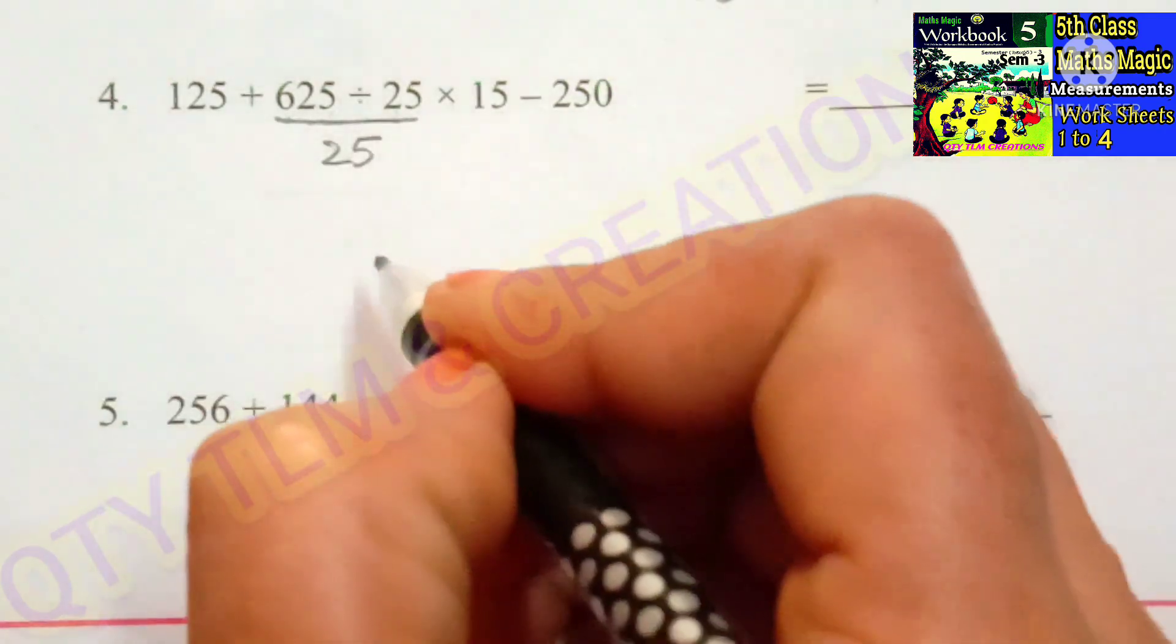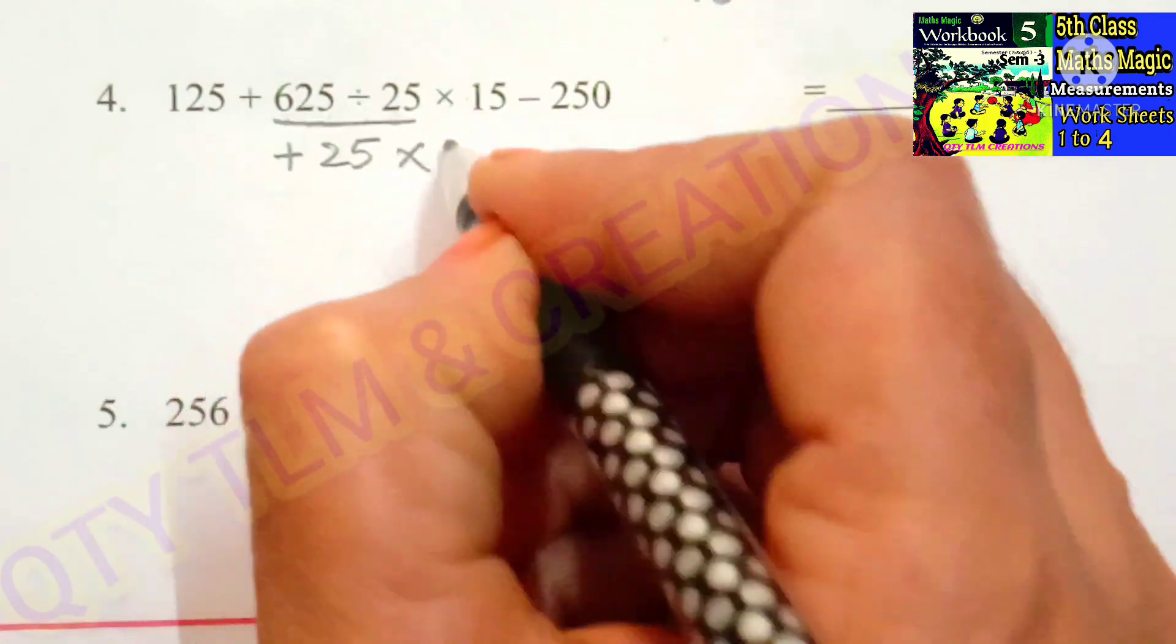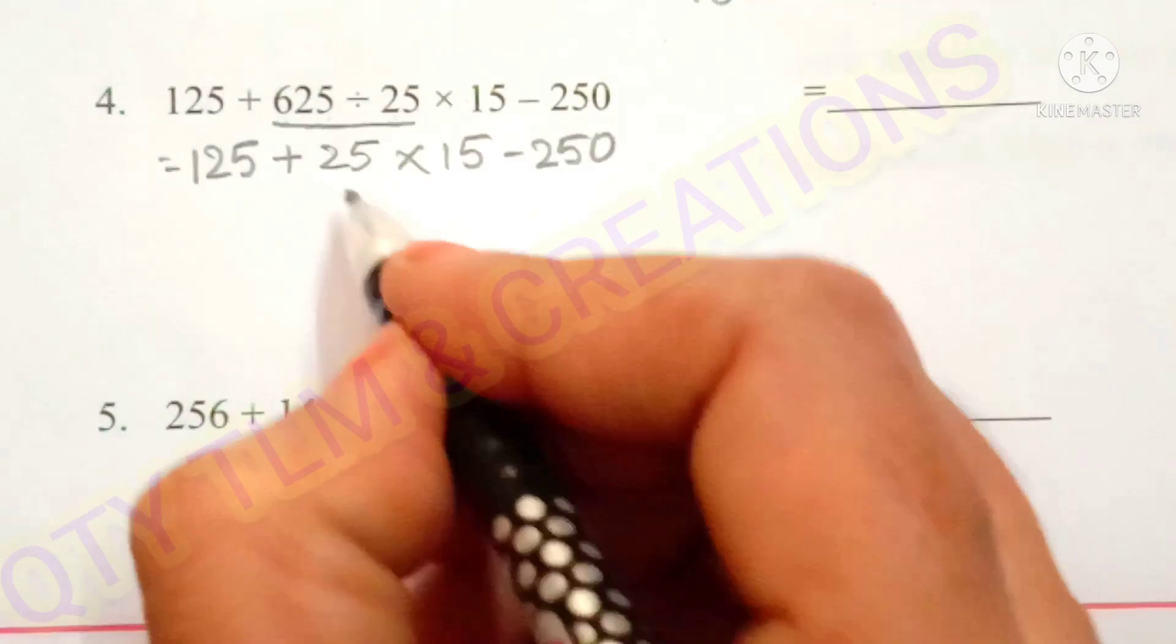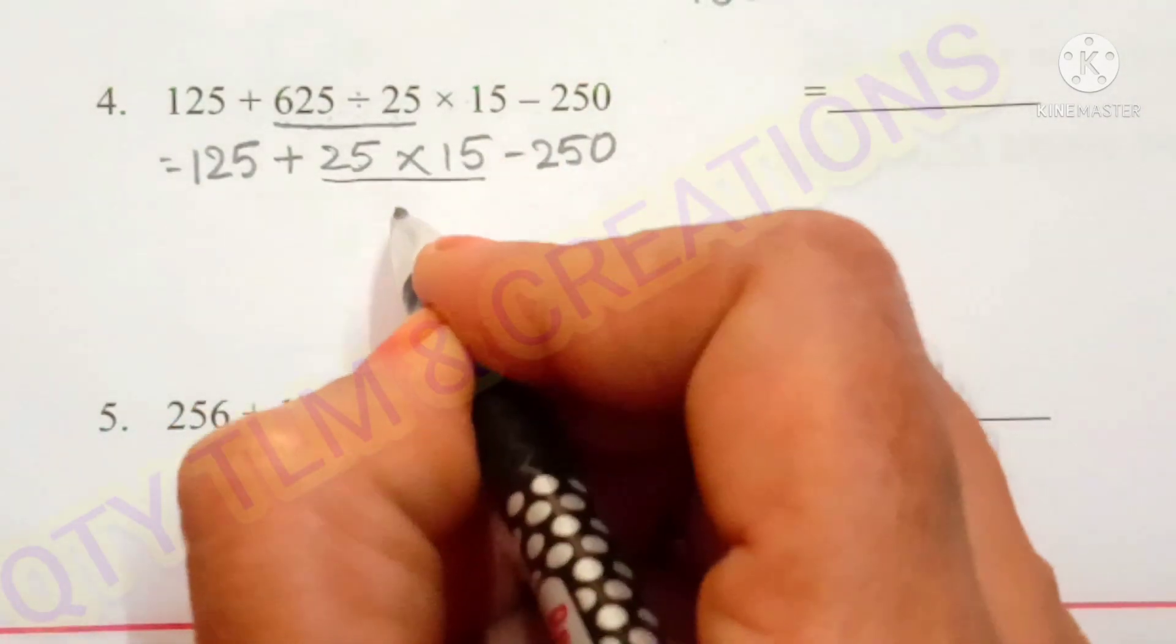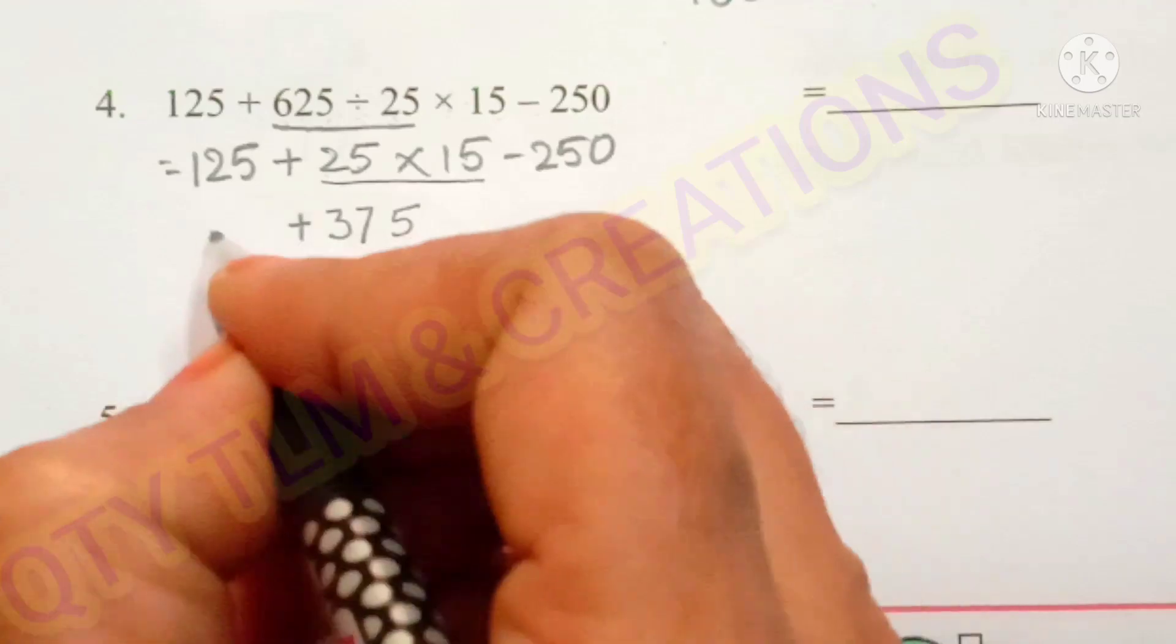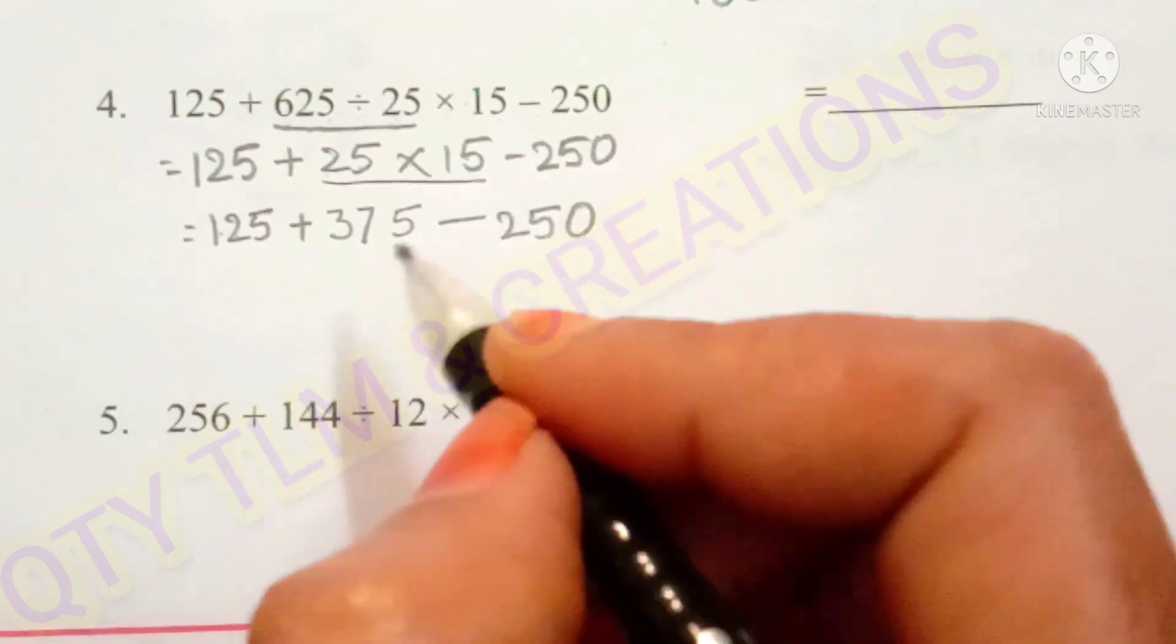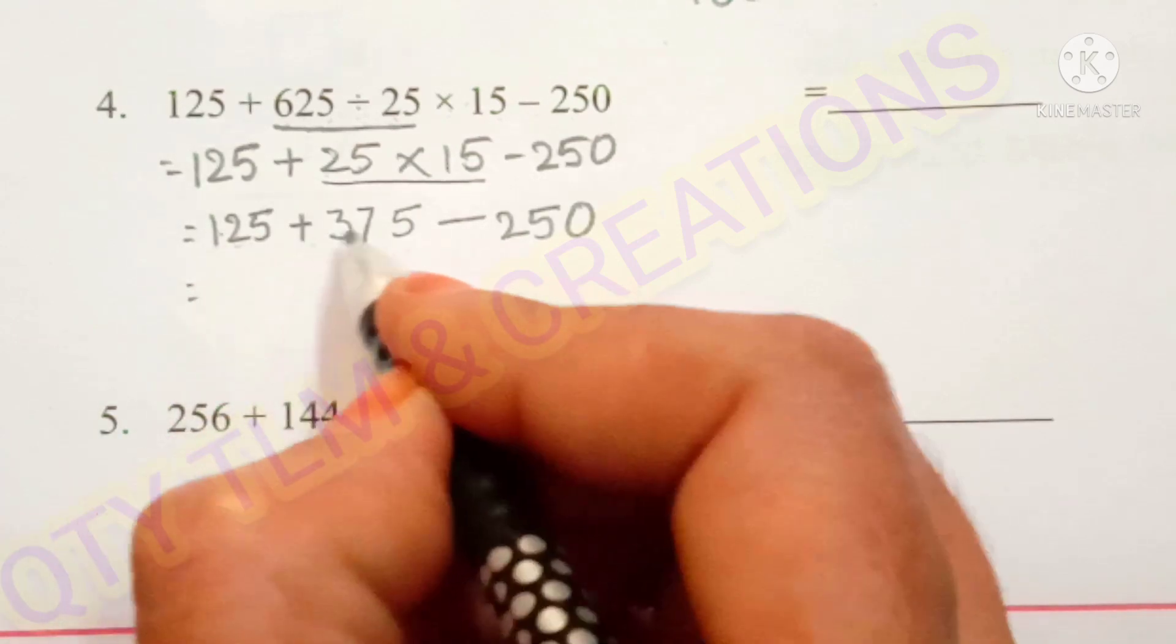So we get 25 plus 25. Next 25 into 15 minus 250. And here we down this 125. Next operation is 25 into 15. So 15 times 5 is 75. 15 times 2 is 30 plus 7, 37. So 125 plus 375 minus 250.